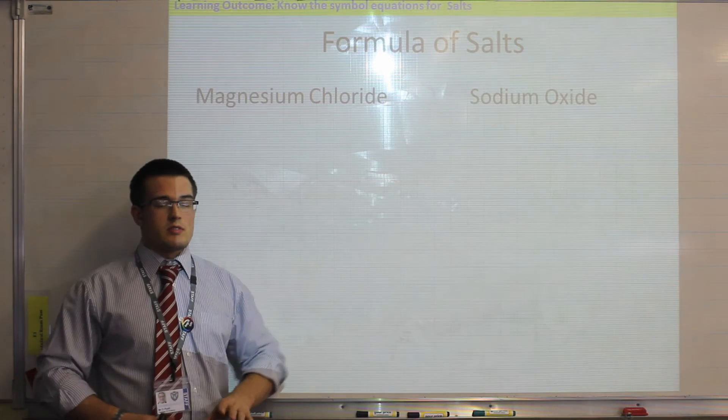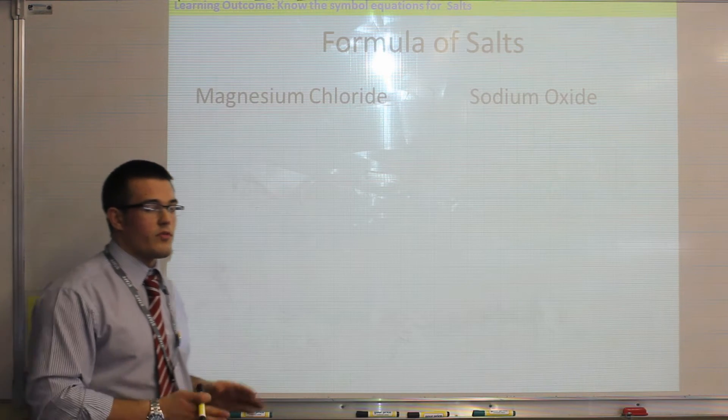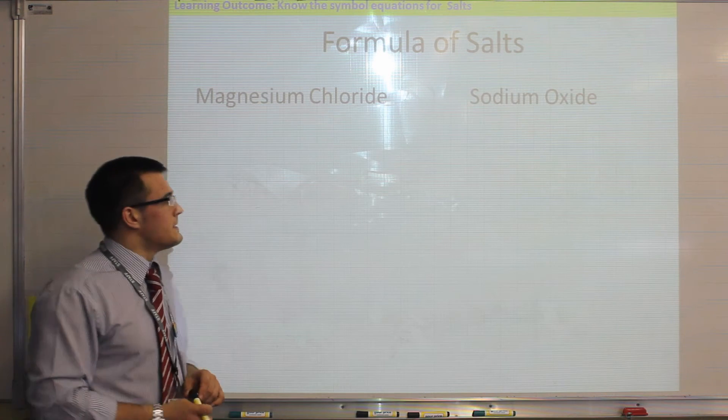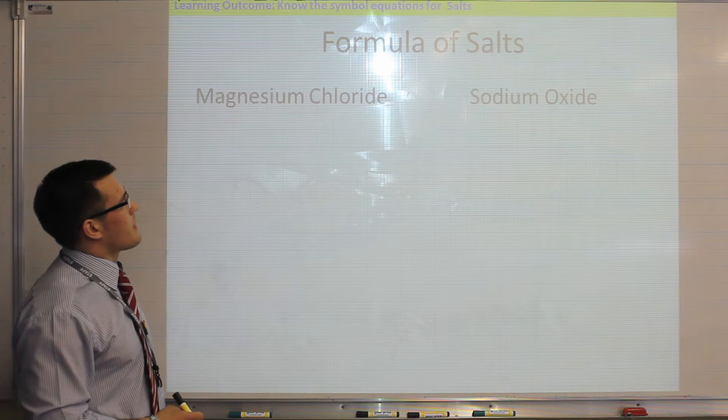Okay, so there are two methods by which we can calculate the formula of a salt, and we'll cover both, but we'll focus on one in particular. So when you see the name of a salt, so magnesium chloride, you can then break that down into its ions.